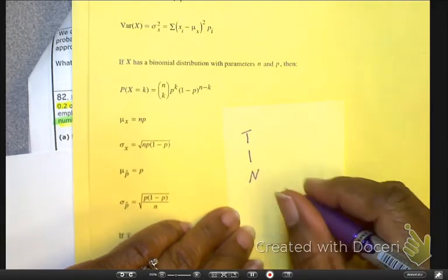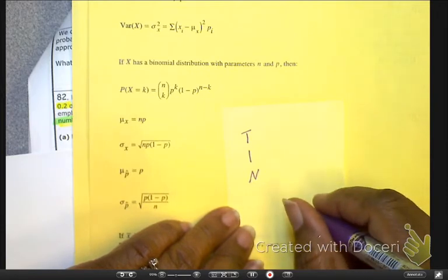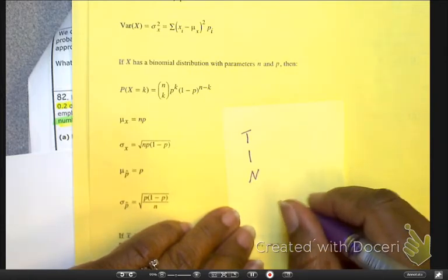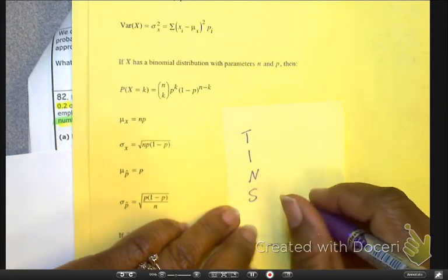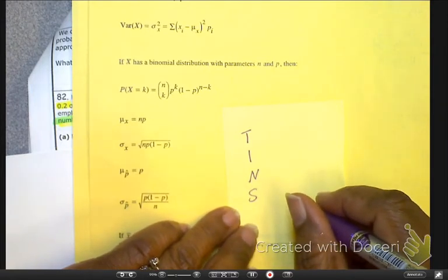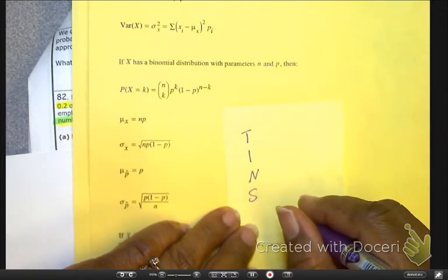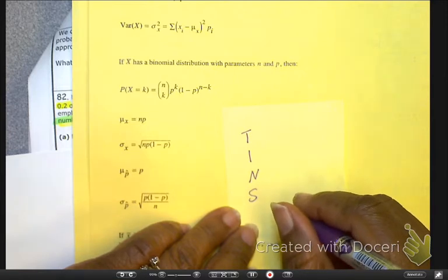N, fixed number of trials. It doesn't change. And S is your probability of success is going to be consistent throughout this entire exercise.